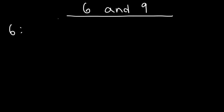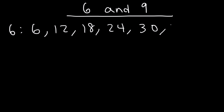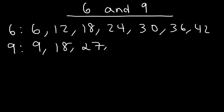Let's start with 6. Multiples of 6 are 6, 12, 18, 24, 30, 36, 42, and so forth. Now let's do the same with 9: 9, 18, 27, 36, 45, 54, and so forth.